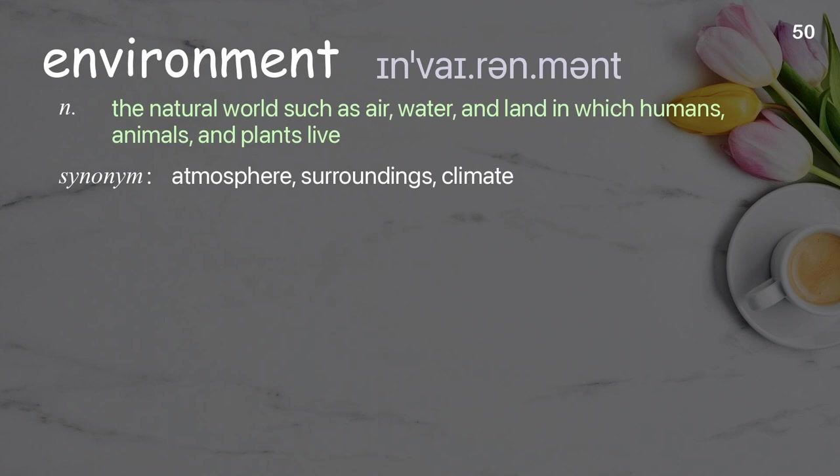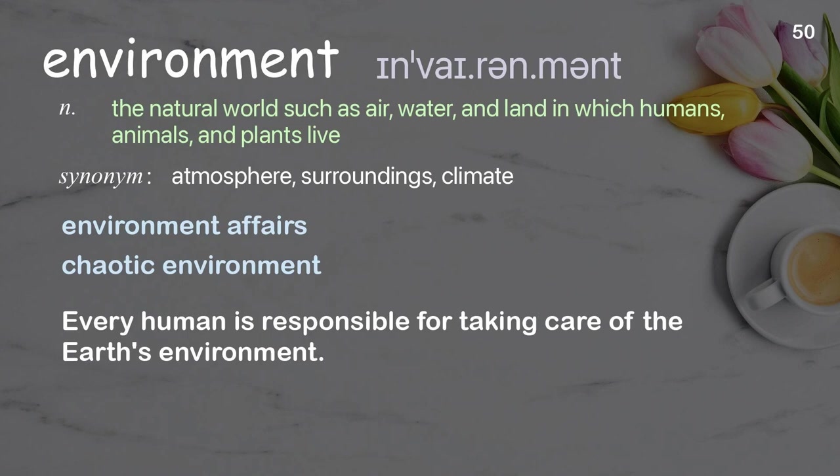Environment: the natural world such as air, water, and land in which humans, animals, and plants live. Examples: environment affairs, chaotic environment. Every human is responsible for taking care of the Earth's environment.